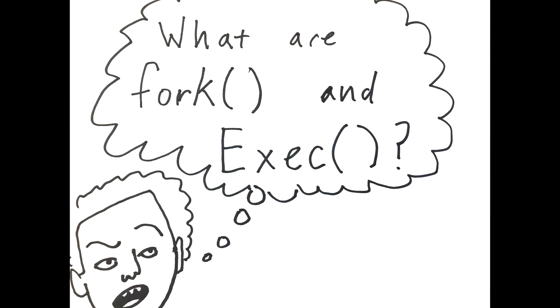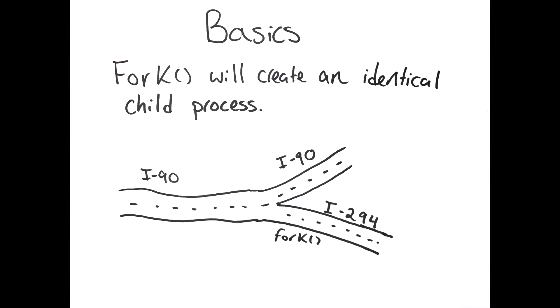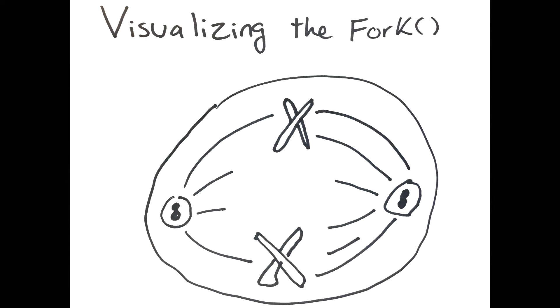What are fork and exec and how are processes created? When a process in execution makes a fork system call, an identical child process is created and the original process becomes the parent process.